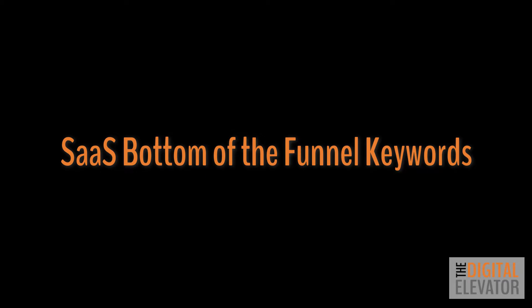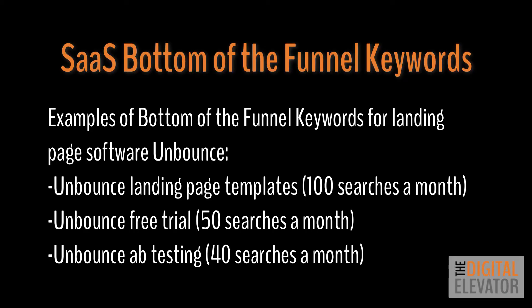Bottom of the funnel keywords for SaaS companies are related to interest, desire, and action. These people know there are solutions out there that meet their needs and they are narrowing down their decision before they inevitably make a purchase. They already know who you are and will be making transactional searches to inform their final decision. For Unbounce, this means keywords such as Unbounce landing page templates — 100 searches a month — Unbounce free trial — 50 searches a month — and Unbounce A/B testing — 40 searches a month. This may be your final chance to convince your prospects why your product is the best fit. Bottom of the funnel content can take the form of case studies, free white papers geared at using their product for some end result, webinars, review pages, or product update pages for extra value adds based on the perceived needs of their buyers.